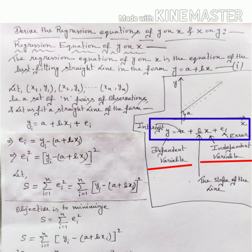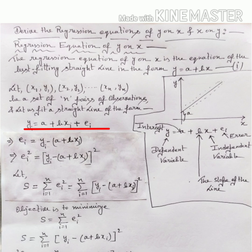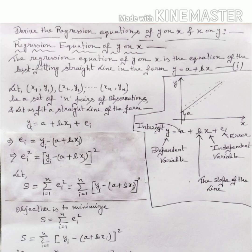Applying the method of least squares, the constants a and b are obtained by solving the normal equations. We fit a straight line of the form y_i = a + bx_i + e_i, where e_i is the error term. Our main objective is to minimize that error term, so we write e_i = y_i − (a + bx_i), and squaring both sides gives e_i² = (y_i − (a + bx_i))².